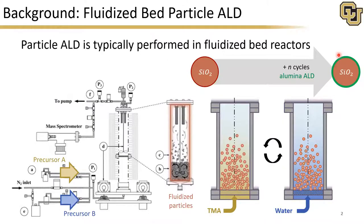Particle ALD is typically performed in fluidized bed reactors, as shown here. We load our powder into the fluidized bed chamber, then dose our precursors in an alternating fashion, separated by purge doses to remove any unreacted precursor or gaseous byproducts. This process is repeated as many times as necessary to produce a film of the desired thickness. I'm showing here the binary sequence for alumina ALD, which is a very common coating chemistry in ALD and also the chemistry I work with for my PhD. This is a temporal process, meaning we space out the precursor doses in time, and also a batch process, meaning there is no solids inflow or outflow during the ALD.